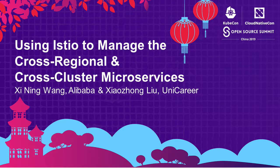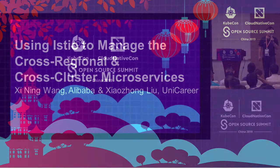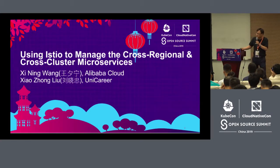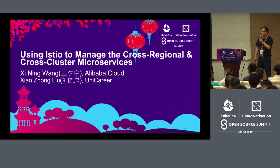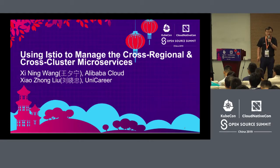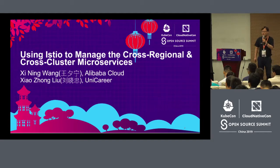The time is up and we're getting started right now. Thank you for coming. First, a self-introduction: I'm from Alibaba Cloud. Today I want to talk about how to use Istio to manage cross-regional and cross-cluster microservices of Alibaba Cloud. I've got another colleague with us — Liu Xiaojong from Unicred, one of our clients.